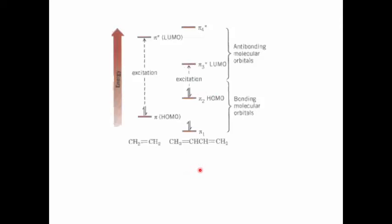Another generalization we find is that the longer the chain of pi electron conjugation, the narrower the energy gap between HOMO and LUMO. Consequently, a molecule that has a long chain of conjugated pi electrons will therefore tend to absorb at a longer wavelength.